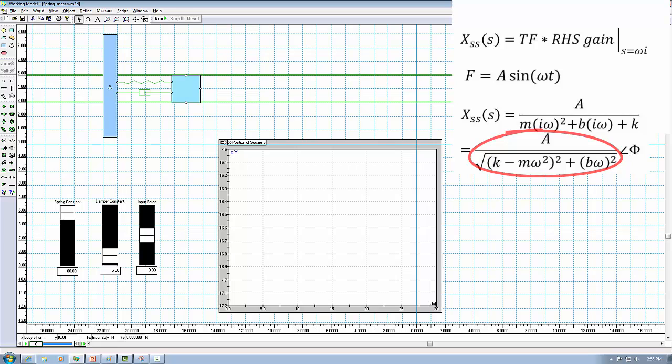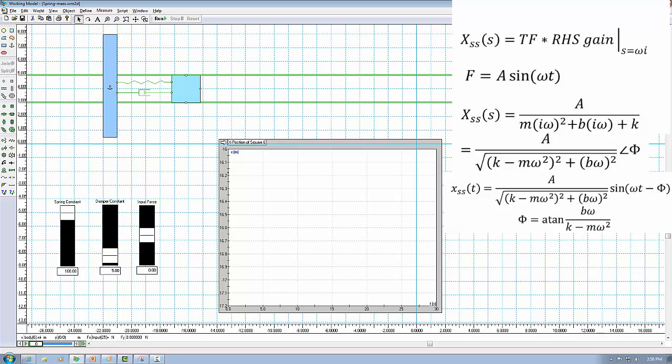The first term is amplitude and the second term is a phase shift. In time domain, it is going to look like this, a sine function with the amplitude and phase shift.